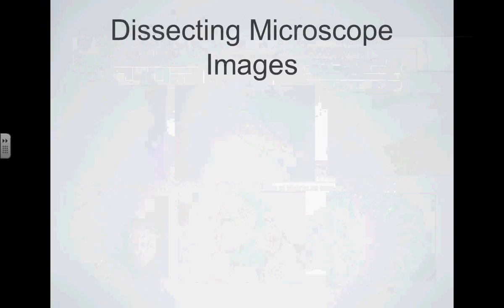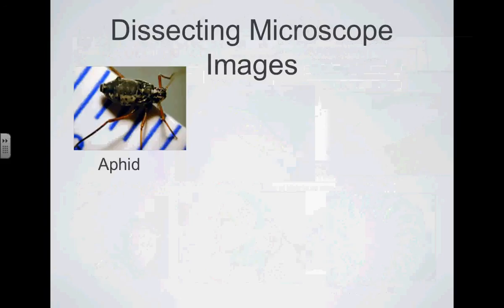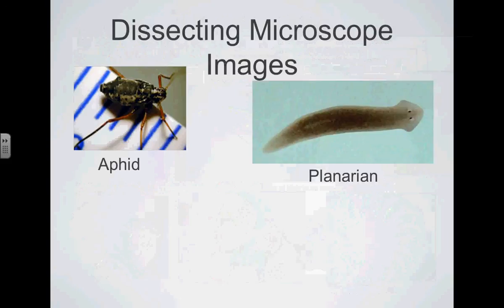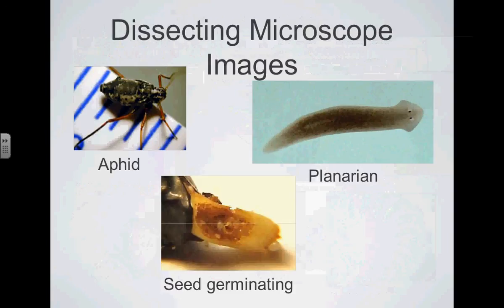If we look at some images taken with a dissecting microscope, things look a little different. Here's an aphid, a tiny little insect that's a pest of many common garden plants. This is a planaria. It's a flatworm. We'll be looking at those later in the year. This is a seed just starting to germinate and break out of its shell. So these images, how do they look different from the compound microscope?